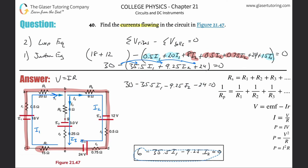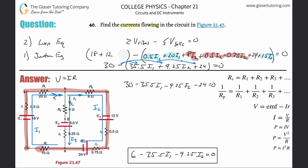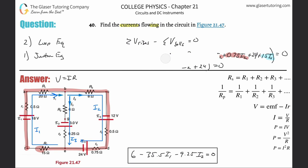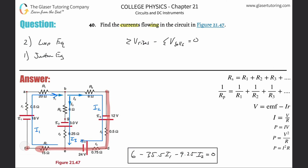Now let's do the second loop. Choose any remaining loop — it doesn't matter which. I'll start from the same point F but go around a different loop in a clockwise direction, making sure it's different from the first loop.